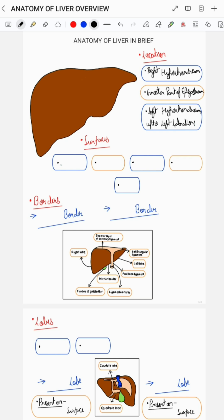Liver has five surfaces which are the anterior surface, the posterior surface, the superior surface, the inferior surface, and the right surface.